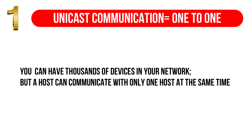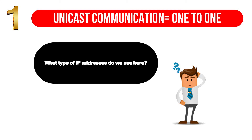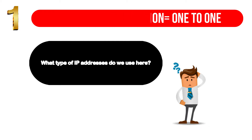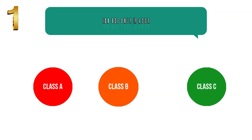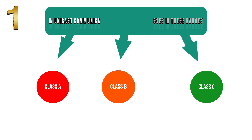In this type of communication, network devices use only a specific type of IP address. What type of IP address? Well, we can have whatever IP address in the range of class A to class C. We already talked about classes of IP addresses in the last two videos.